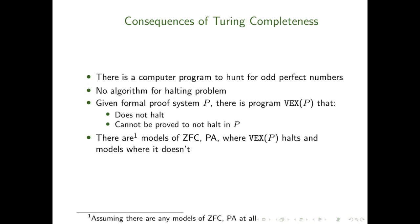Things get even trickier when we bring model theory in. Consider your favorite formal proof system — a collection of axioms and techniques for making deductions. Call it P. There's a program I'll call VEX, depending on P, that will not halt and cannot be proved to not halt within P. We know it doesn't halt, but the proof is outside the proof system. This program could be written in any Turing-complete language, including Fractran. Assuming there are any models of set theory or Peano arithmetic at all, there are models of ZFC where this program halts and models where it doesn't.